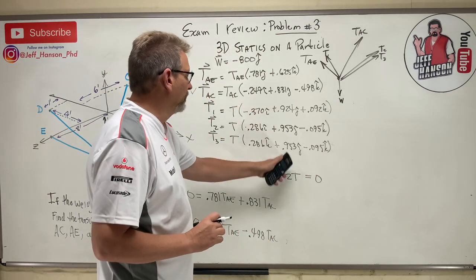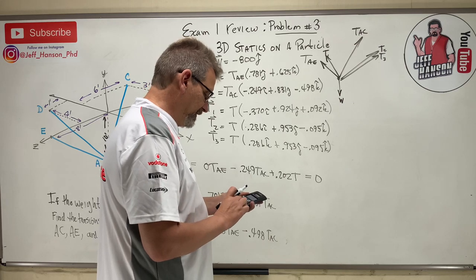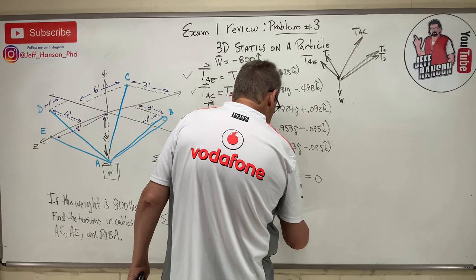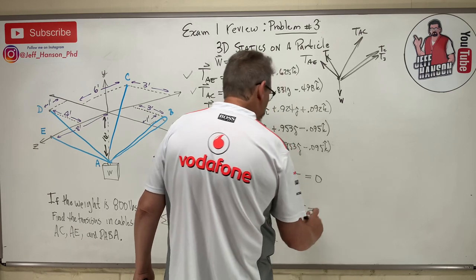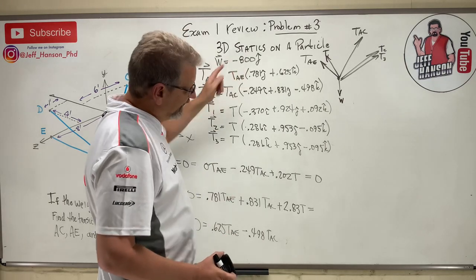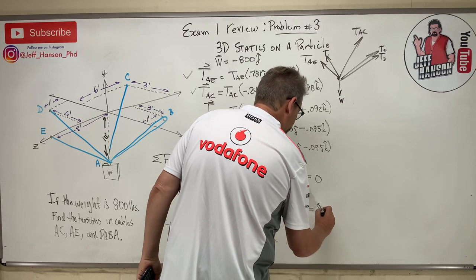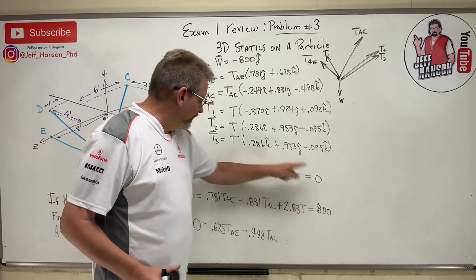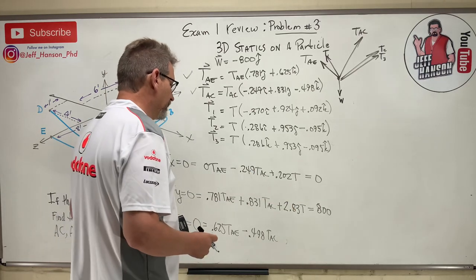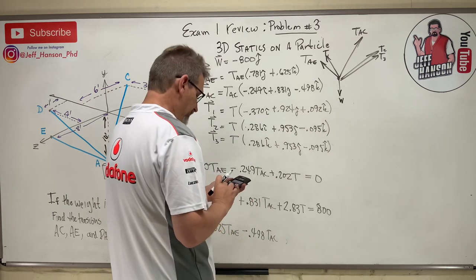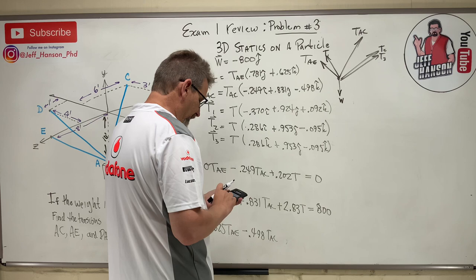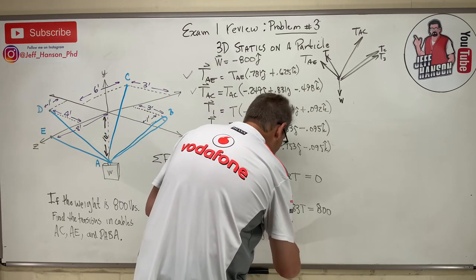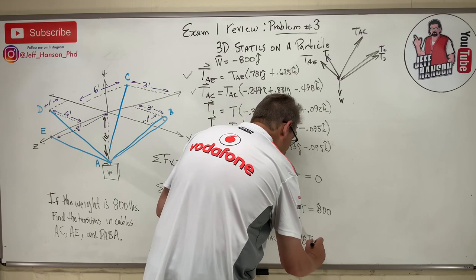For the j-hat (Y) equation: 0.953 × 2 plus 0.924 equals 2.83, so 2.83 T equals 800 (moving the minus 800 to the other side). For the k-hat (Z) equation: 0.092 minus 0.095 minus 0.095 = negative 0.098, so minus 0.098 T equals 0. I've organized columns for T_AE, T_AC, and T with constants on the right — ready for the 3×3 system solver.